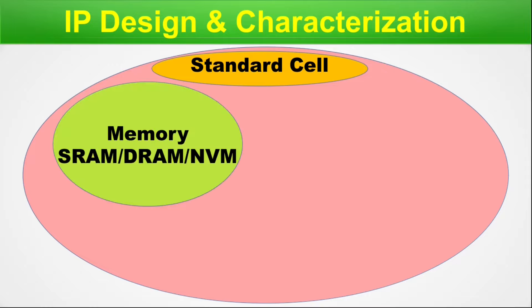Memory IPs are an essential part of any electronic gadget. Memory is found in CPU cache, PC RAM, smartphone internal and external memory, appliances, pen drives, SSDs, hard drives, and smartwatches.